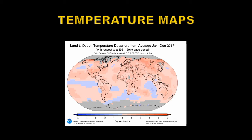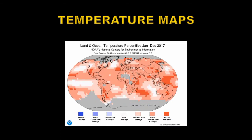Now this is very useful and fairly accurate, but it doesn't tell you how significant those changes are. So there's another type of map which I often like to use, which is the percentiles map, which shows the significance of those temperature changes. Here deep red is record warm and deep blue is record cold. And on this map you can see that every pixel on the globe is either near average or above average temperatures, which is why 2017 was a really warm year.